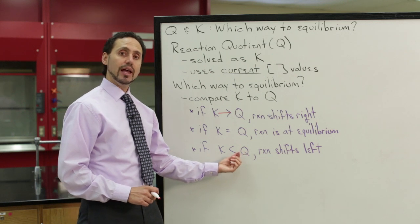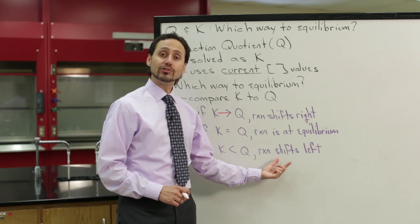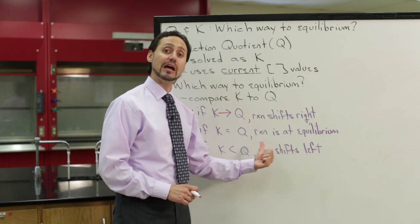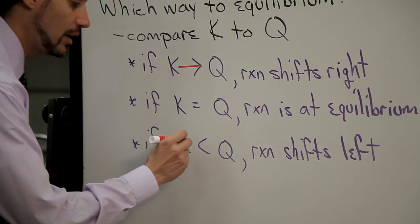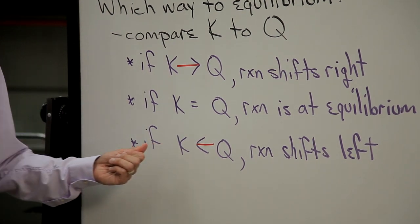If you calculate Q and you find that K is smaller than Q, that means that the reaction is going to shift to the left to reach equilibrium. So if K is smaller than Q, the reaction shifts to the left.